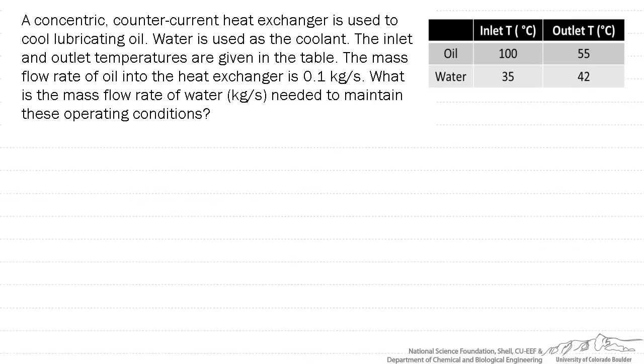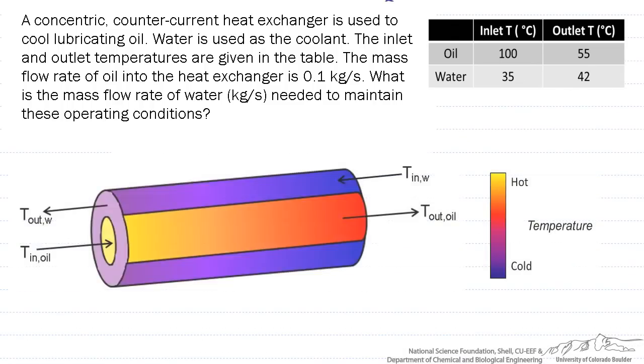Let's start with drawing the picture. This is what's known as a concentric heat exchanger. What you have is an inner tube where a fluid flows. In this case, we're going to say that it's the oil. Then around it is another tube where another fluid flows. In this case, it's going to be water.